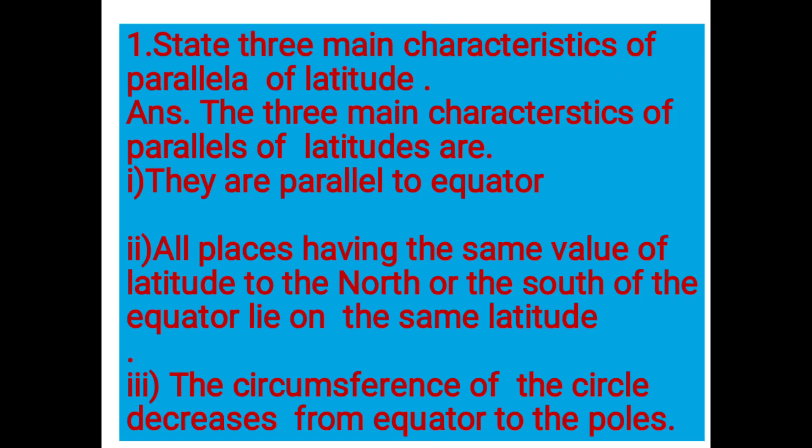Question 1: State three main characteristics of parallels of latitude. The three main characteristics of parallels of latitudes are: they are parallel to the equator; all places having the same value of latitudes to the north or south of the equator lie on the same latitude; and the circumference of the circle decreases from the equator to the poles.